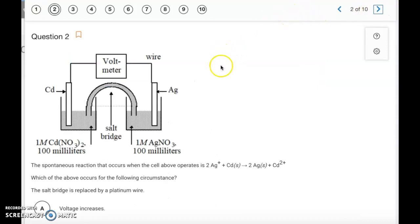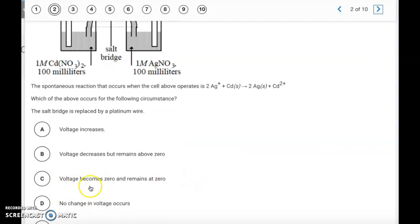Alright, question number two, we have a galvanic cell. The question, which of the above occurs for the following circumstance? So the salt bridge is replaced by a platinum wire. The salt bridge has to be some permeable substance that will allow ions to be transferred. So in the lab that we did, we just used filter paper soaked in potassium nitrate. So it has to be something that will contain ions, positive and negative ions, that can flow to either cell. If you just replace it with a wire, a wire can transfer electrons, but it's not going to transfer ions. So this is going to cause the voltage to become zero and remain at zero. So it's going to be letter C.